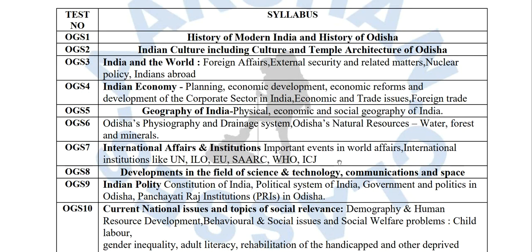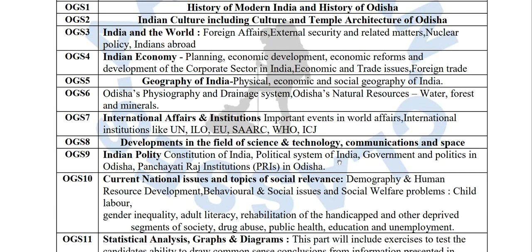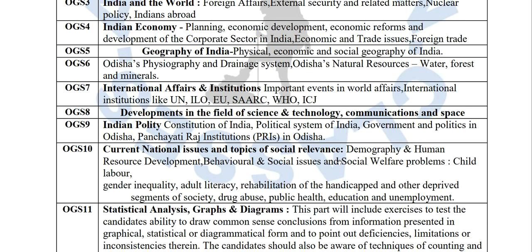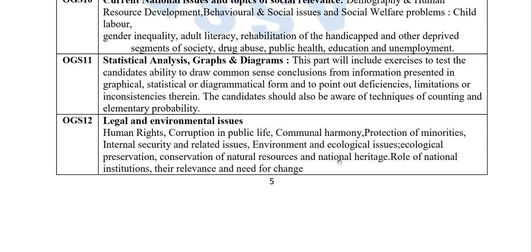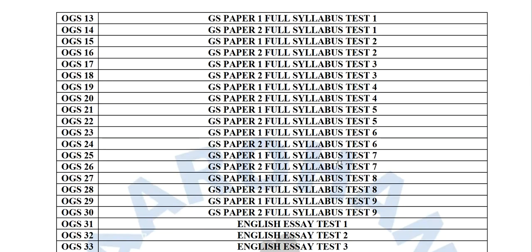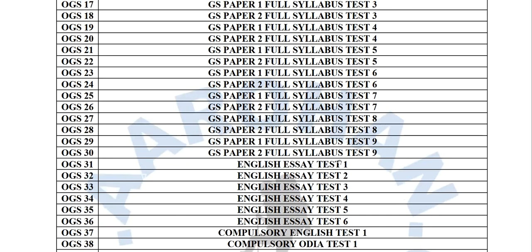For GS: Test 1 is Modern Indian History and History of Odisha; Test 2 is Indian Culture including temple architecture of Odisha; Test 3 is India and the World; Test 4 is Indian Economy; Test 5 is Geography of India; Test 6 is Geography of Odisha; Test 7 is International Affairs and Institutions; Test 8 is Developments in Science, Technology, Communication and Space; Test 9 is Indian Polity; Test 10 is Current National Issues. Test 11 is Statistical Analysis, Graphs and Diagrams; Test 12 is Legal and Environmental Issues. From Test 13 onwards are full syllabus tests up to Test 30, followed by six English SA tests from 31 to 36, and two English and two Odia tests.